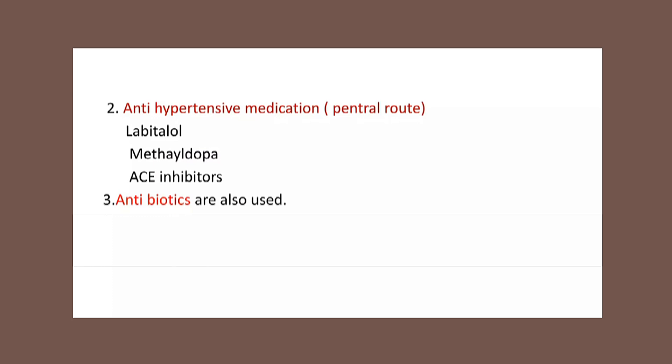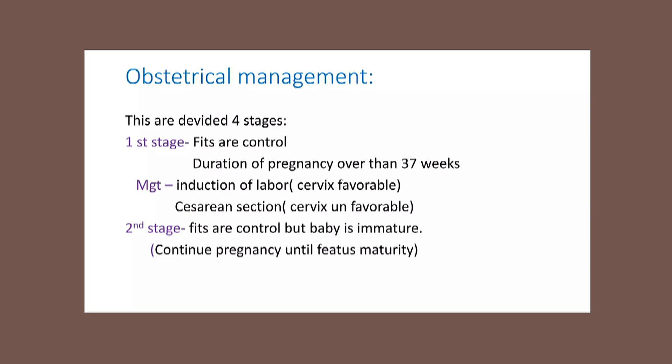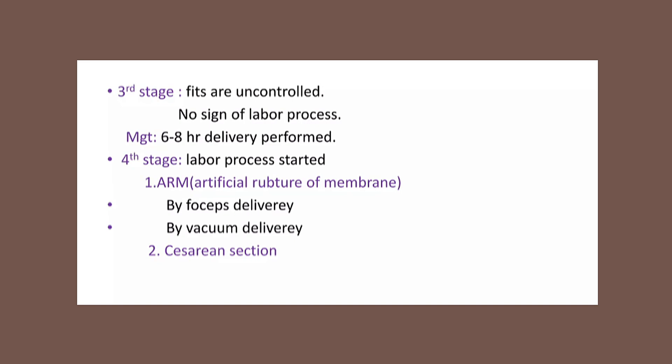The obstetric management is divided into four stages. In stage one, fits are controlled and pregnancy is over 37 weeks — induction is performed if the cervix is favorable; otherwise, cesarean section is done. In stage two, fits are controlled but the baby is immature, so pregnancy continues until fetal maturity. In stage three, fits are uncontrolled with no signs of labor — stabilize the mother and normalize blood pressure before conducting delivery. In stage four, labor has already started — artificial rupture of membranes is performed and delivery is conducted using forceps or vacuum; if conditions are unfavorable, proceed to cesarean section.